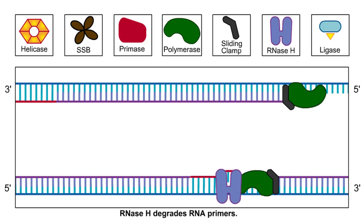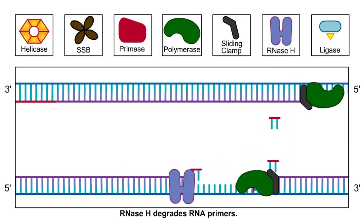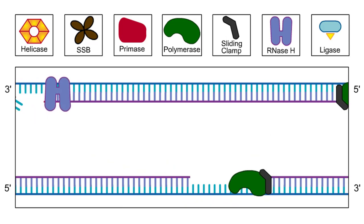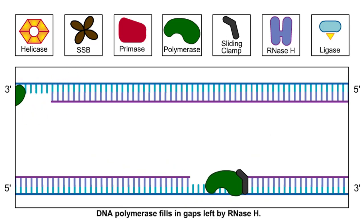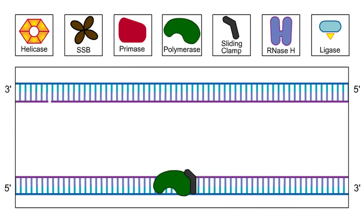As replication proceeds, RNase H recognizes RNA primers bound to DNA templates and removes the primers by hydrolyzing the RNA. DNA polymerase can then fill in the gap left by RNase H. The DNA replication process is completed when the ligase enzyme joins the short DNA pieces together into one continuous strand.